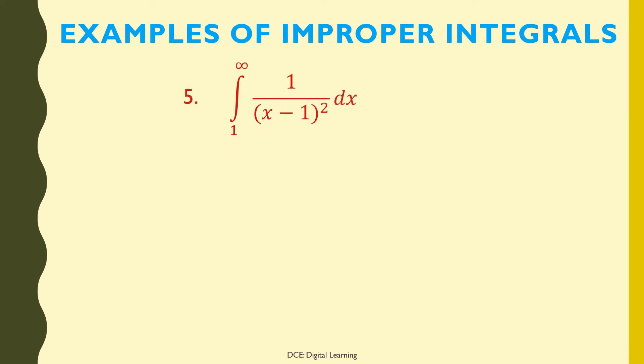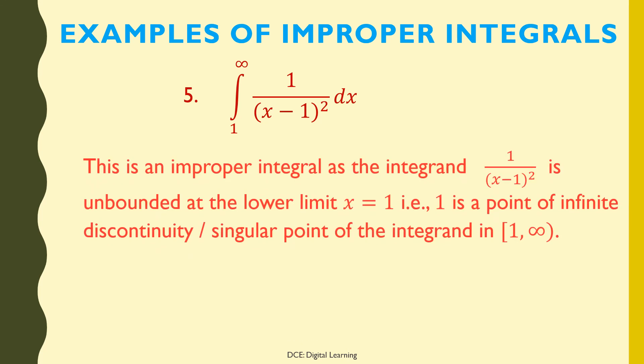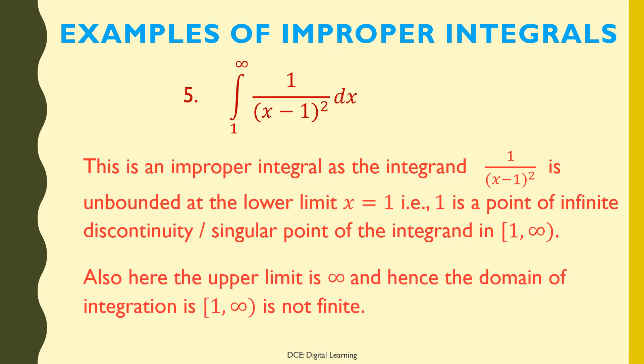Fifth example: ∫1/(x − 1)² dx from 1 to ∞ is an improper integral, as the integrand 1/(x − 1)² is unbounded at the lower limit x = 1 — that is, 1 is a point of infinite discontinuity or singular point of the integrand in the domain [1, ∞). Also, the upper limit is infinity and hence the domain of integration [1, ∞) is not finite.